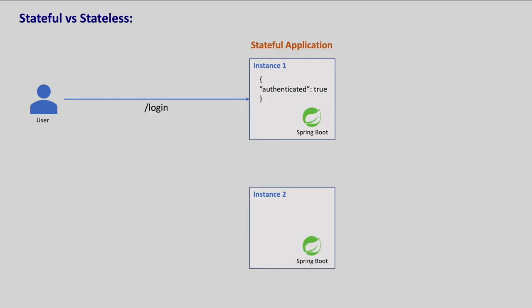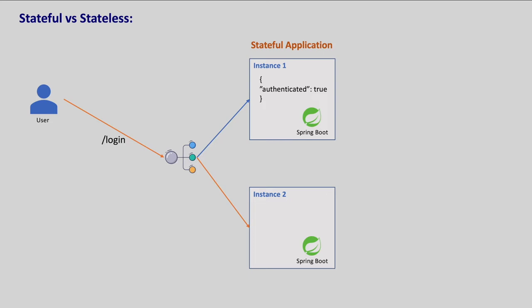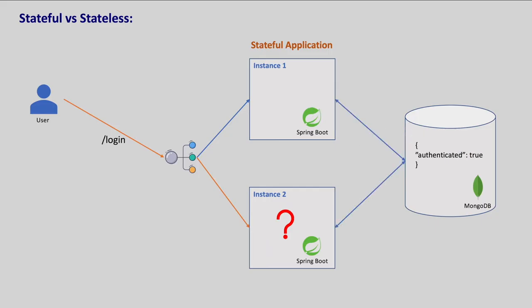But what if we have multiple instances of the same application with a load balancer in front? Let's say the first request goes to instance one and we set the authenticated flag to true. Now if the second request goes to instance two, it doesn't give the correct result as we didn't set the flag on instance two. So as a best practice, it's recommended to move the state to a database. So now when the login request is sent the first time, we generate a token and save it in the DB, and our Spring Boot application expects this token for subsequent requests and validates from the DB. So no matter how many instances we have, we will get the same result as we are not storing any state in the Spring Boot applications. As we are not storing any state in our application, our application is called a stateless application and the database is called a stateful application as it is storing the state.